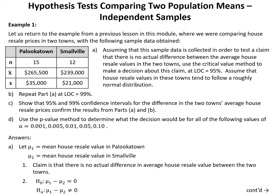In Example 1, we return to the example from a previous lesson comparing house resale prices in two towns — Palookatown and Smallville — with sample data provided in the table. Part A asks us, assuming this sample data is collected to test the claim that there is no actual difference between the average resale values in the two towns, to use the critical value method to make a decision about this claim at LOC equals 95%. We assume that house resale values in these towns follow a roughly normal distribution.